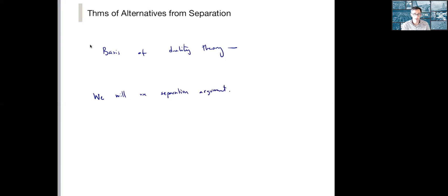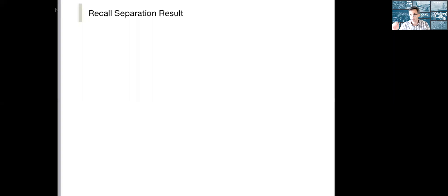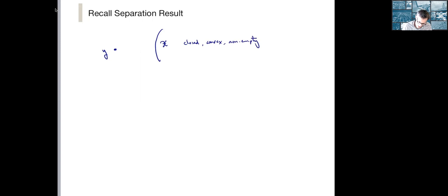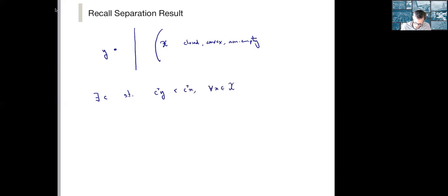Let's first recall the key separation result that we want to use. If we have a point y and a convex set X that's closed — and of course always non-empty — then there exists a hyperplane which leaves y strictly on one side. Algebraically, there exists some c such that c transpose y is strictly less than c transpose x for any x in our closed convex set X that does not contain the point y. This is what we're going to use.